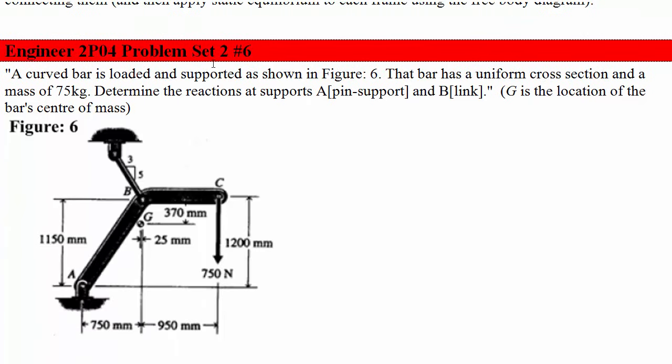Okay, so problem set 2 number 6. A curved bar is loaded and supported as shown in figure 6. We can't ignore the mass of the bar. Determine the reactions at supports A, a pin support, and B which is a link. So we're looking at the reactions on this frame. G is the bar center of mass. They've located that for us and shown us where it is relative to the rest of the bar.